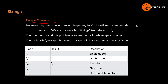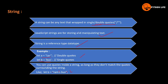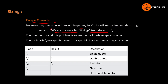Now, escape characters — because strings must be written within quotes, JavaScript will misunderstand a string that has double quotes inside it. For example, let text equal to a string like 'We are the so-called Vikings from the Northern.' There are double quotes here and here, so this will not be understood and will cause an error. So in this case, we can use single quotes or double quotes. The solution to avoid this problem is to use the backslash escape character. Backslash escape character turns special characters into string characters.